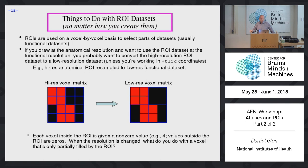Some issues to think about when dealing with ROIs: we drew on a high-resolution anatomical data set, but we'll mostly apply it to much lower-resolution fMRI data — perhaps two or three millimeters instead of one millimeter. We need a method for going between those two resolutions, handling cases where a low-resolution voxel is only partially filled by the high-resolution ROI.